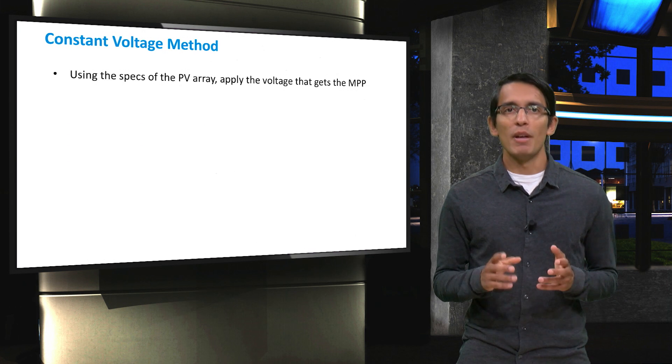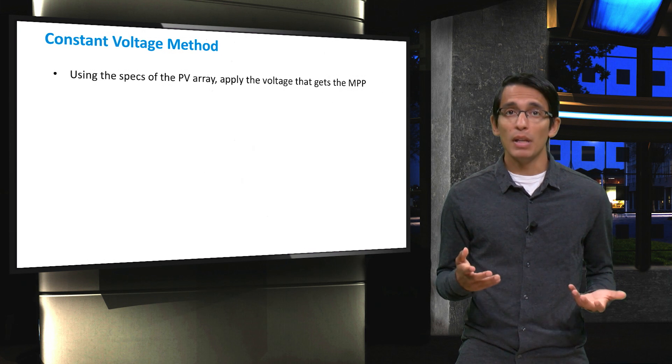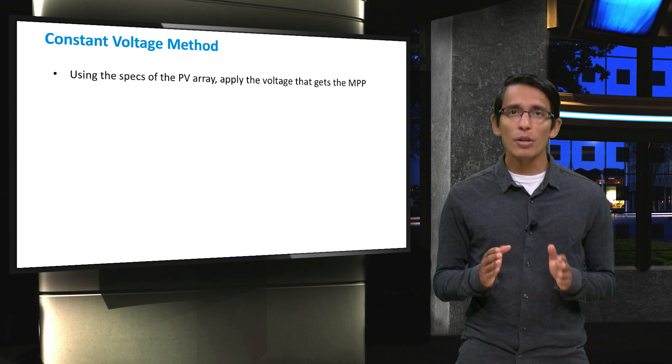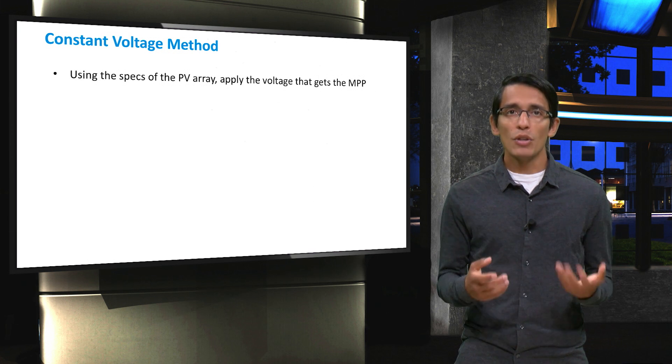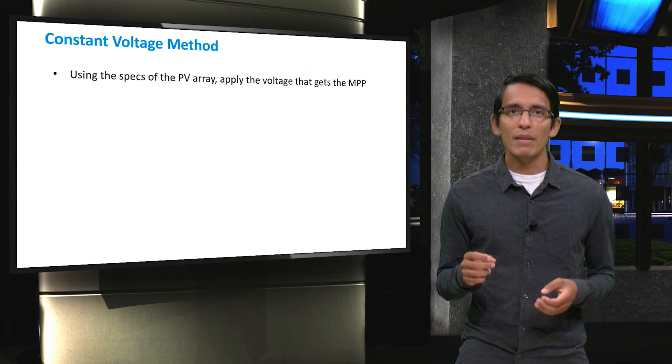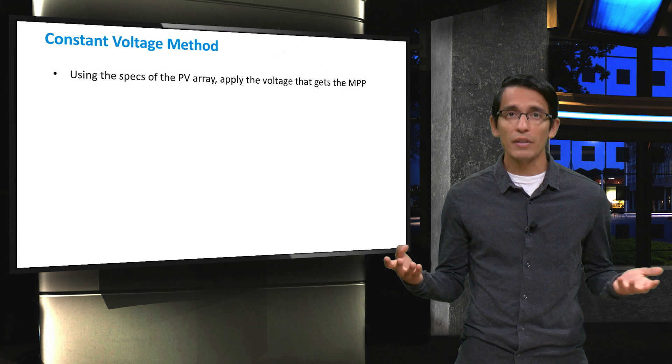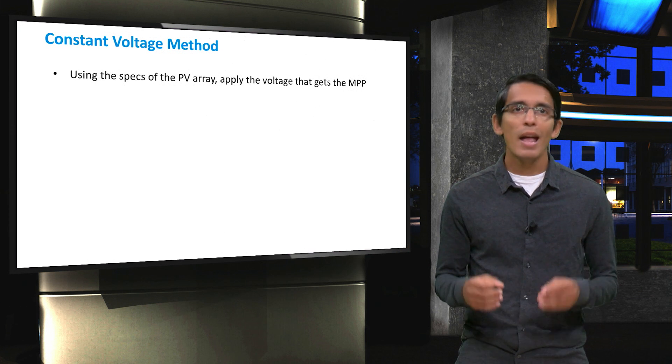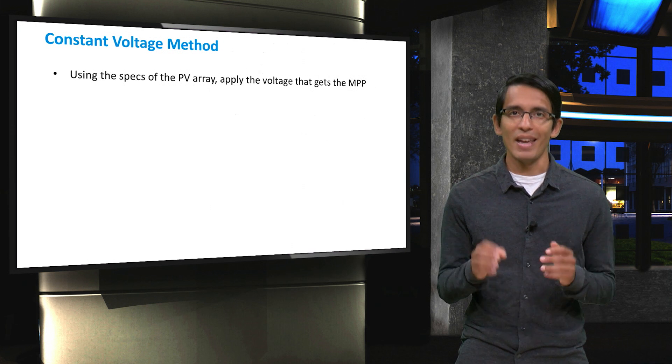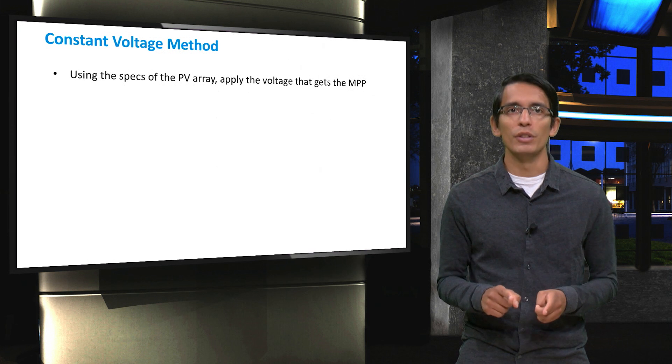The first such method is the constant voltage method. As the name implies, this method simply hard codes the VMPP into the system. As you saw in the last video, the MPP of a solar array can change based on temperature, shading, or other factors. However, this method considers those effects negligible and simply uses the VMPP that is measured at standard test conditions of the panels and always sets that voltage.